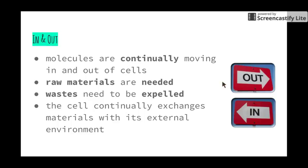Molecules are continually moving into and out of cells. Raw materials are needed for things such as photosynthesis and respiration, and wastes produced need to be expelled. They need to leave the cell to be taken to organs that can excrete them, otherwise they can build up and cause damage. The cell continually exchanges materials with its external environment - oxygen and glucose come in, carbon dioxide and water go out.